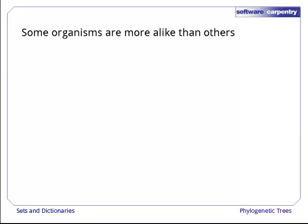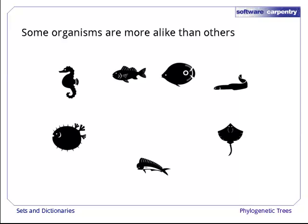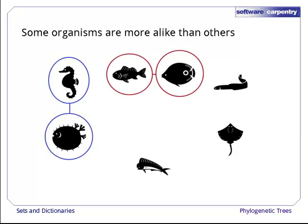You don't have to look at the natural world very hard to realize that some organisms are more alike than others. For example, if you look at the appearance, anatomy, and life cycles of these seven fish, you can see that these two are closely related, as are these two, and these two. But what about the seventh? Where does it fit in, and how do the pairs relate to each other?